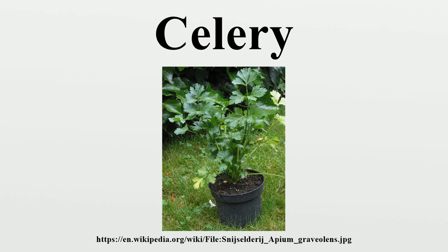The seeds are broad ovoid to globose, 1.5–2 mm long and wide. Modern cultivars have been selected for solid petioles, or leaf stalks. A celery stalk readily separates into two strings, which are bundles of angular collenchyma cells exterior to the vascular bundles.